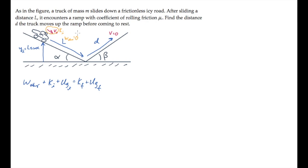Then it hits the bottom and starts to rise. It travels a distance d up the ramp, reaching a final height Yf of d sin β, at which point it stops so that it has no kinetic energy in the final state.